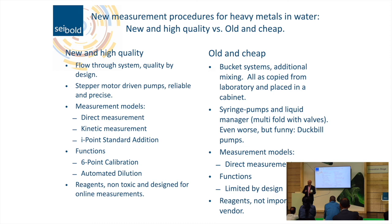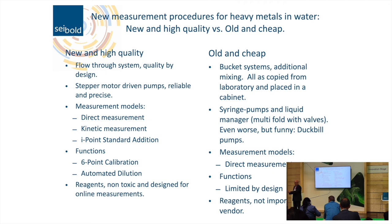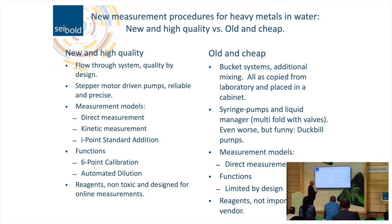Coming back to the flow-through system: it not only reduces instrument complexity and increases operational stability, but also provides additional functions by design. Bubble detection — if a bubble passes the photometer you see it like a black shadow, so you can detect missing solutions automatically. Mixing of solutions is done automatically without extra devices. We have automated dilution: if a value exceeds measurement limits, you can automatically re-measure with dilution without disruption. Competitors need additional separate devices for this.